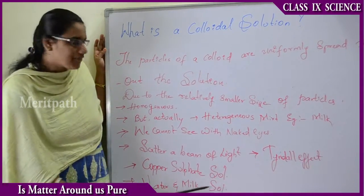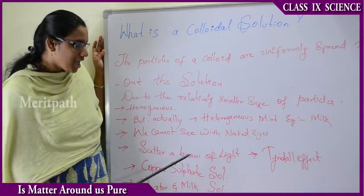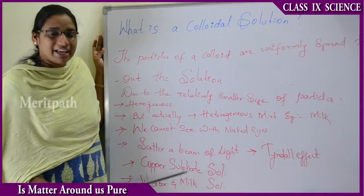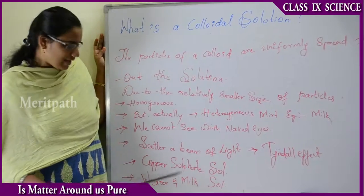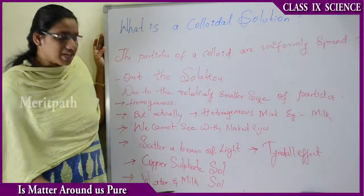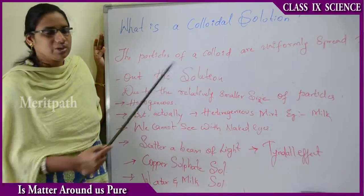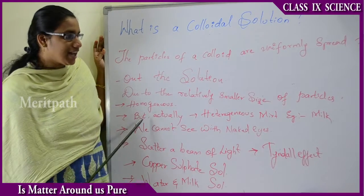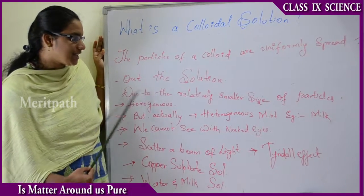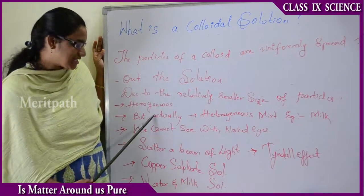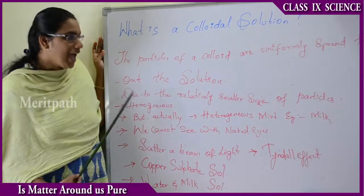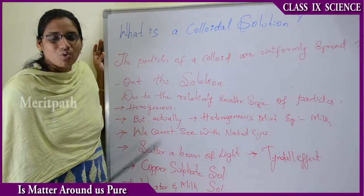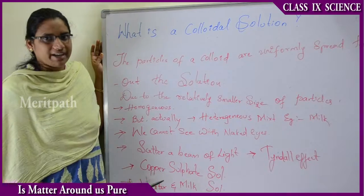For example, take copper sulfate solution — this is a heterogeneous solution. Water and milk solution is a colloidal solution, which is a good example, and we can understand that those particles are of smaller size and are very uniformly spread throughout the surface of the solvent.